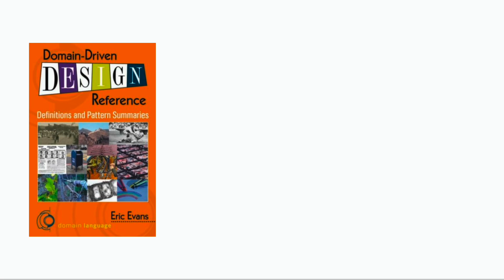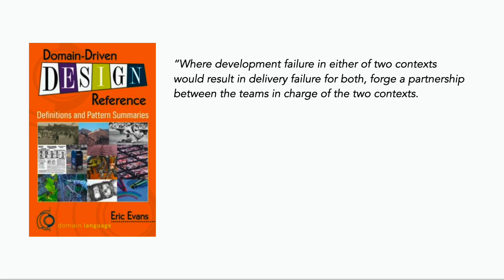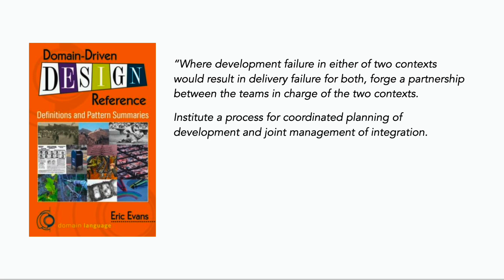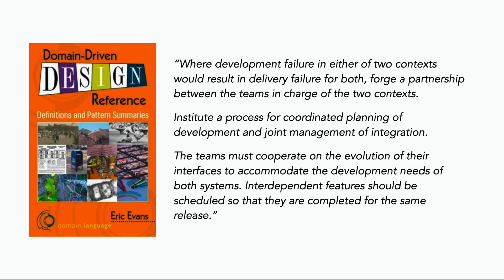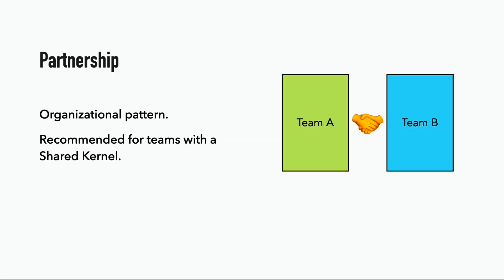To quote the DDD reference book by Eric Evans: where development failure in either of two bounded contexts would result in delivery failure of both, forge a partnership between the teams in charge of the two bounded contexts. Institute a process for coordinated planning of development and the joint management of integration. The teams must cooperate on the evolution of the interfaces to accommodate the development needs of both systems. Independent features should be scheduled so they are completed for the same release. The partnership pattern is not really a technical pattern — it's purely an organizational one, and is recommended for teams with a shared kernel.